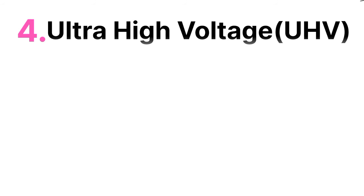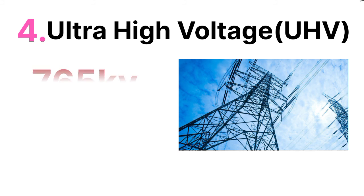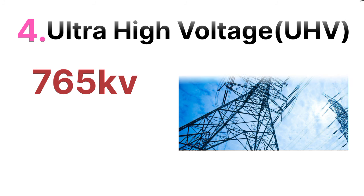The last one is the ultra high voltage transmission line, that is UHV transmission line. In the UHV transmission line, the voltage level is generally 765 KV. These are the classifications of transmission line based on the voltage levels.